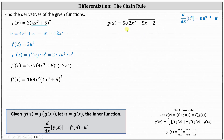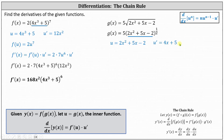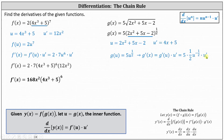For the next example, we first write the square root using the rational exponent of 1/2. We identify u, the inner function: u equals 2x squared plus 5x minus 2, and u prime, the derivative, is 4x plus 5. Using this information, we write g of u equals 5u to the 1/2, which indicates g prime of x equals g prime of u times u prime, where g prime of u is the derivative of 5u to the 1/2 with respect to u: 5 times 1/2 times u to the power of negative 1/2, times u prime.